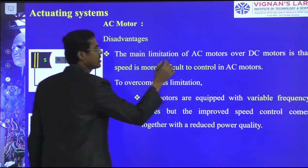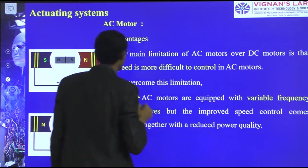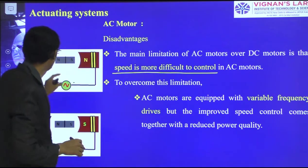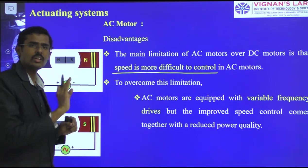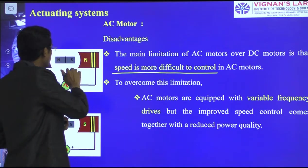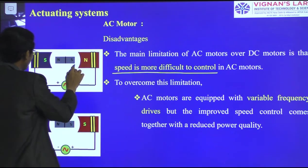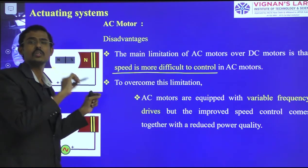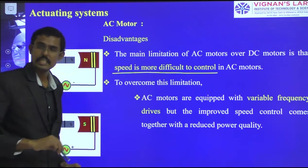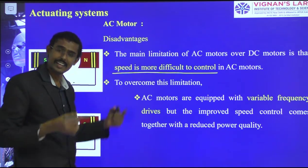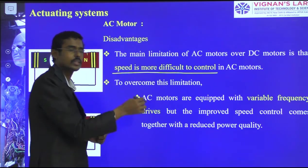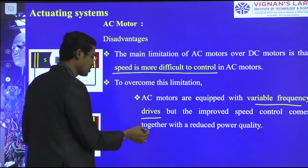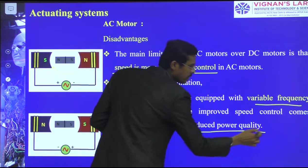The main limitation of an AC motor over a DC motor is that speed is more difficult to control. For speed control, a full 180-degree movement is required, making it a little bit difficult to control compared to DC motors. To overcome this, AC motors are equipped with variable frequency drives, but speed control comes together with reduced power quality.